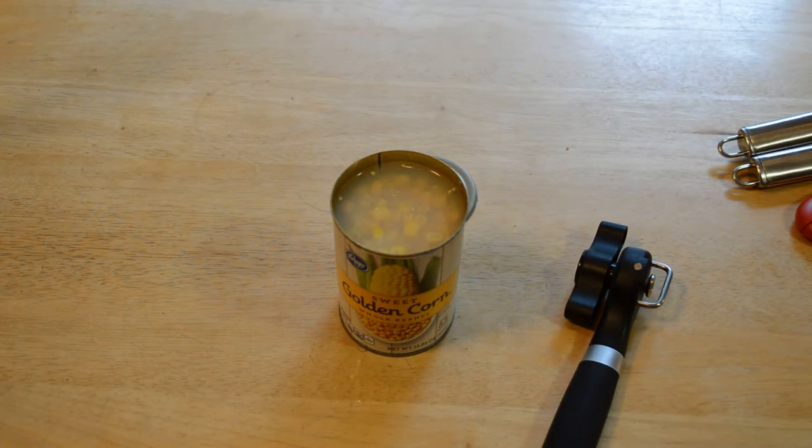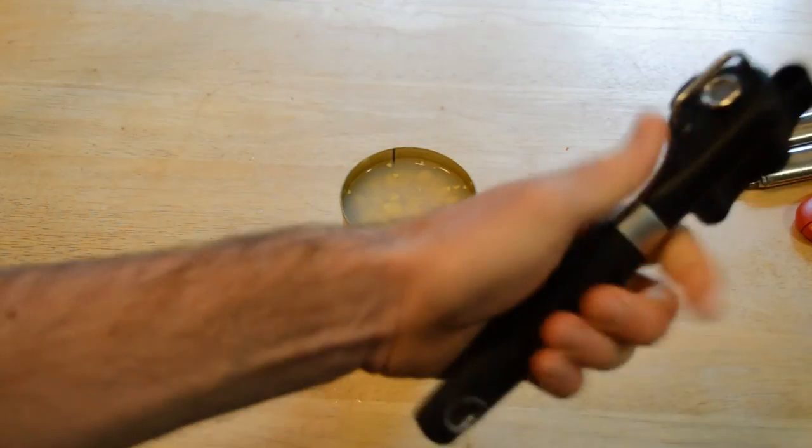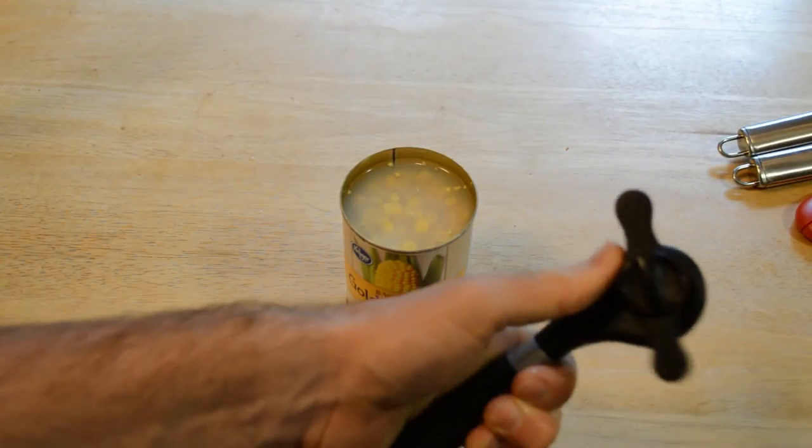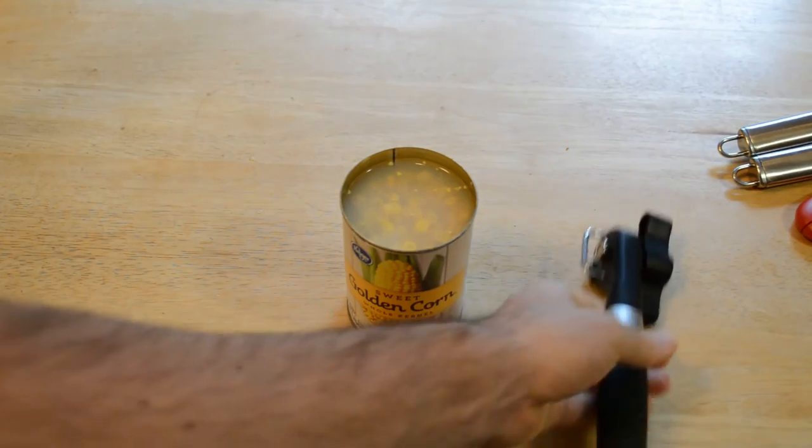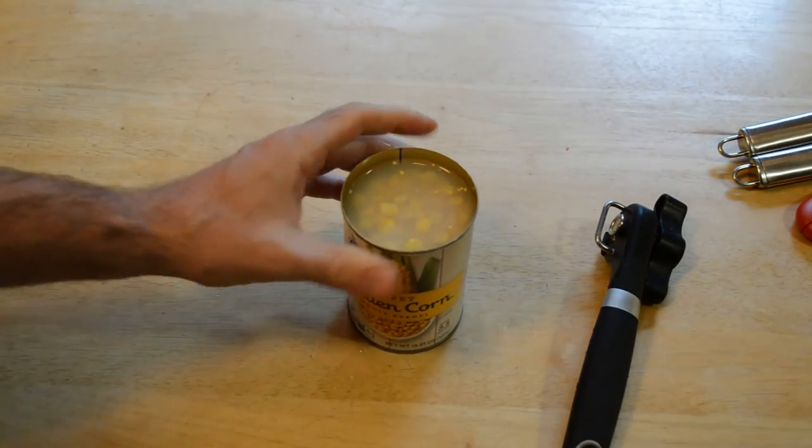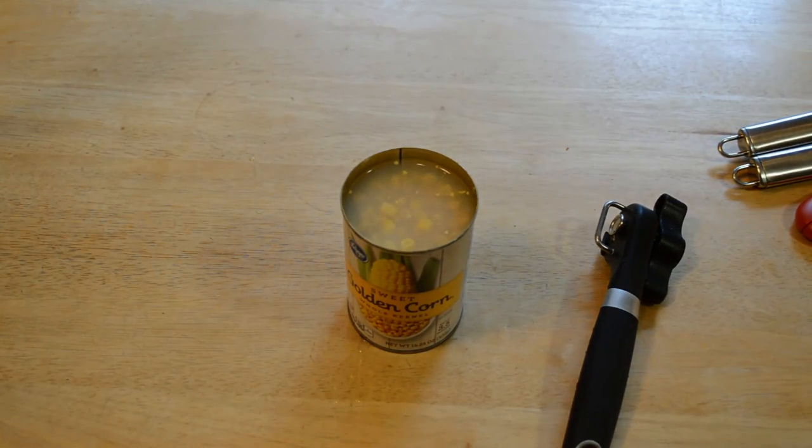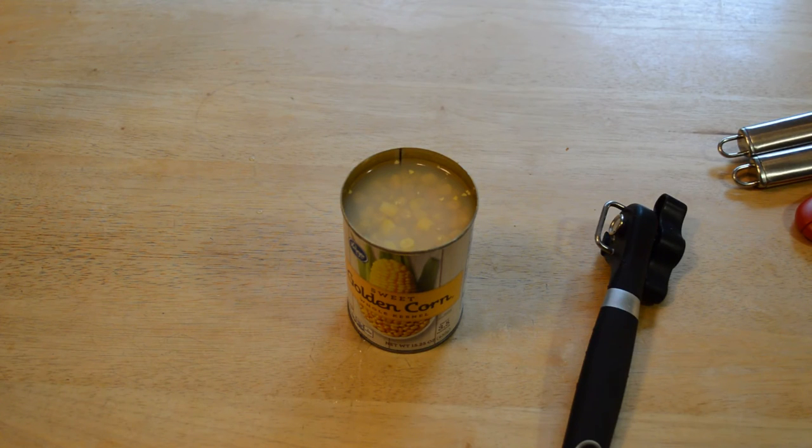So yeah, just wanted to demonstrate the Amato kitchen safety can opener. Well-reviewed product, does what it says, did take off the lid. It's got some weight to it, easy to take off the lid of this can. So yeah, do I recommend it? Yeah, it works good. So I do recommend the Amato kitchen safety can opener, especially for the price. I don't think you'll be disappointed in this can opener.